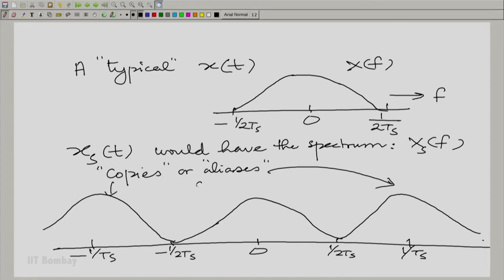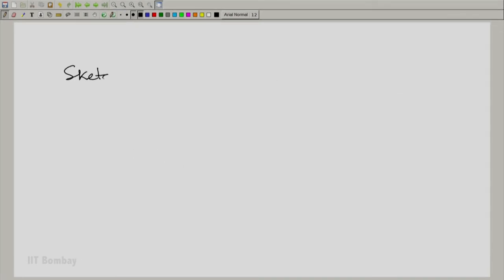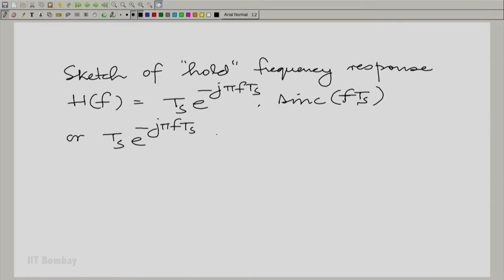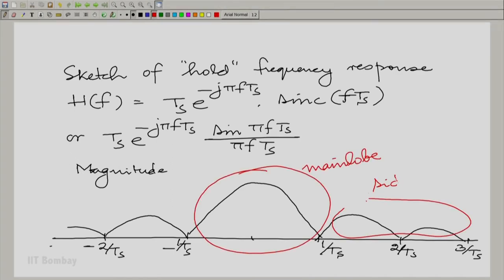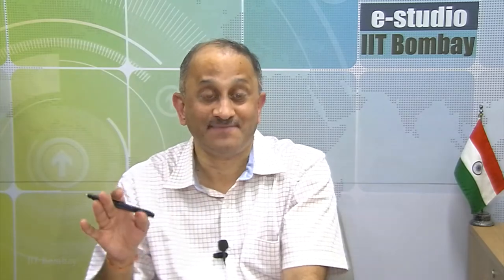You have the original spectrum and its copies. Remember, we gave a name to these copies. We call them aliases. Now, let us sketch the Fourier transform of the hold and then let us put the hold on this. Sketch of the frequency response of the hold. The first thing is we need to write it in the cycles per second domain. We need to write capital H of f.